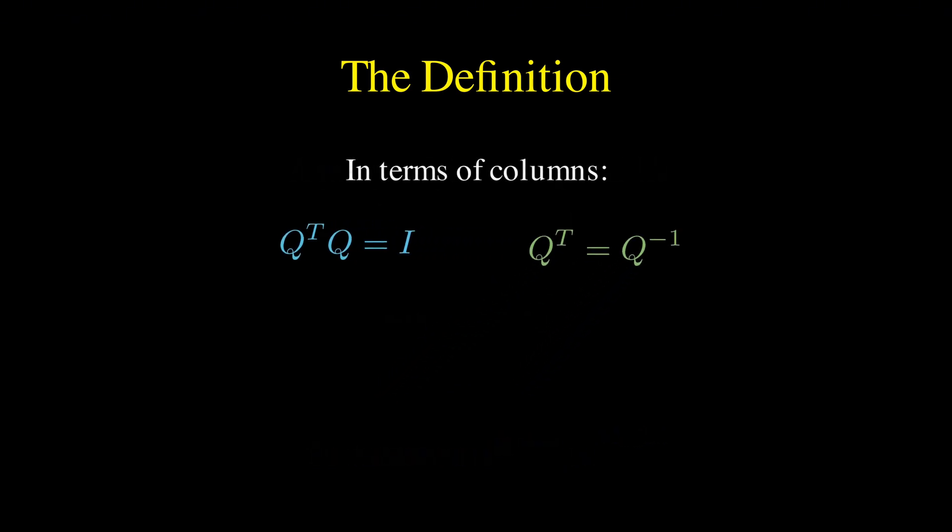Now let's think about what this means in terms of columns of Q. If you write Q with its columns as Q1, Q2 up to Qn, then the condition Q transpose Q equals I is really telling us something about these column vectors.